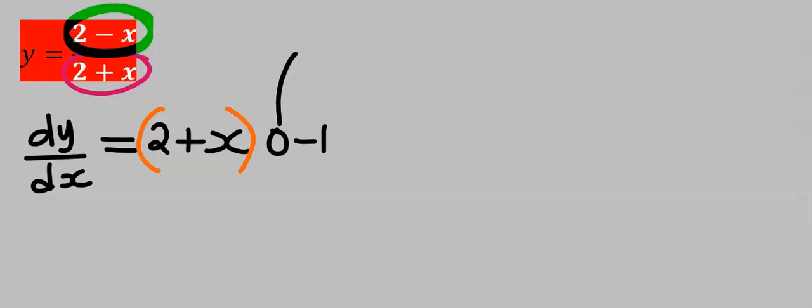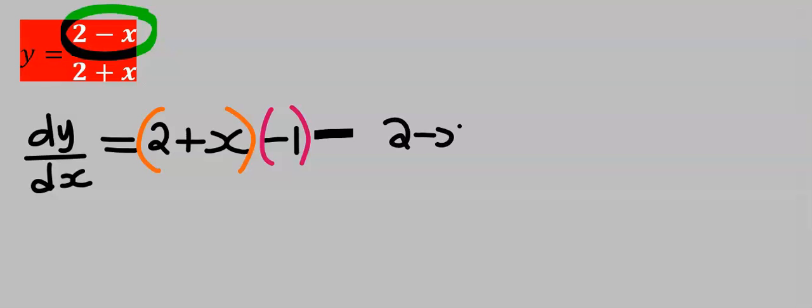However, I'm going to let this zero out, leaving only minus 1. Next, I will put a minus. Next, I will now keep the numerator constant, which is 2 minus x.